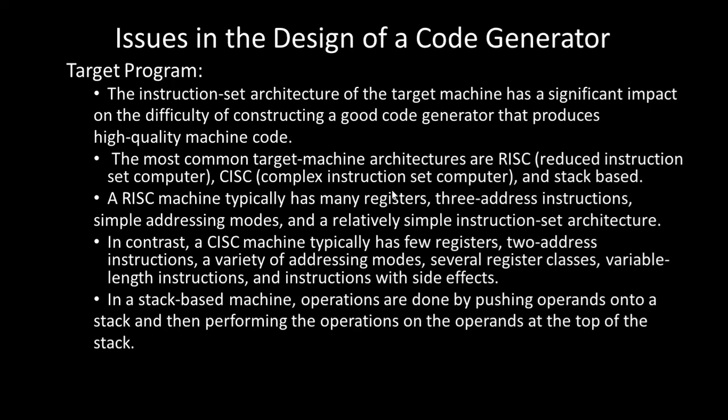RISC machines typically have many registers, three-address instructions, simple addressing modes, and a relatively simple instruction set architecture. In contrast, CISC machines typically have fewer registers, two-address code, a variety of addressing modes, several register classes, variable-length instructions, and instruction side effects. Stack-based machines perform operations by pushing operands onto a stack using push and pop operations, performing operations on the operands at the top of the stack.